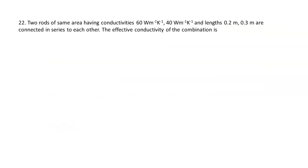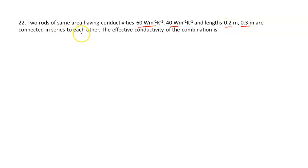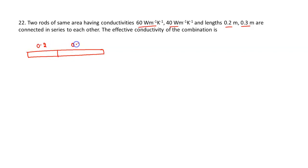Let us see the next question. This is again related to heat transfer. Two rods of the same area having conductivities 60 and 40, and lengths 0.2 metres and 0.3 metres respectively, are connected in series. The effective conductivity of the combination is to be found. Here the two rods are in series.